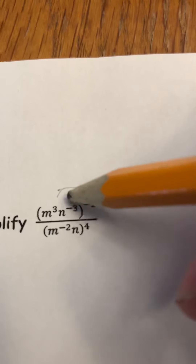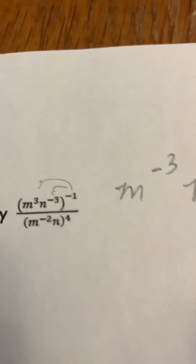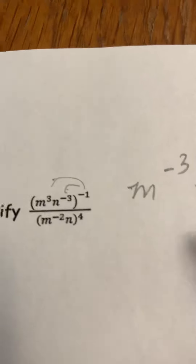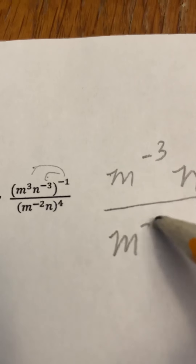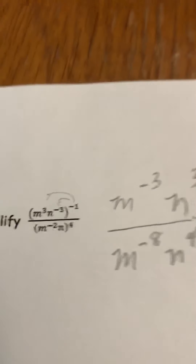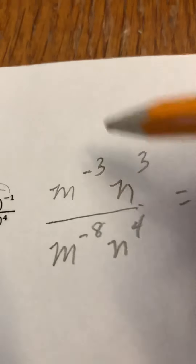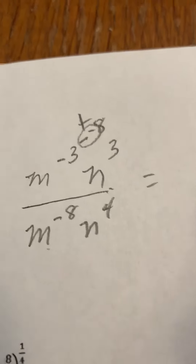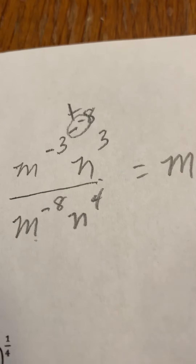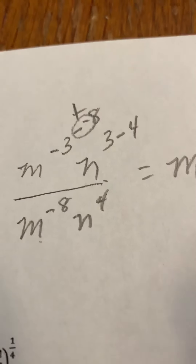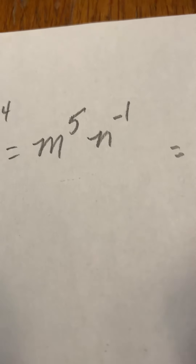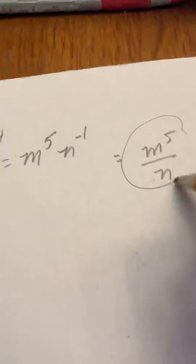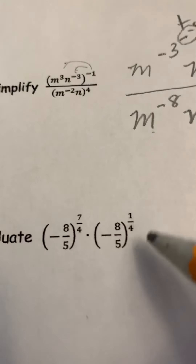Power of a power — we multiply the exponents — gives b to the power of 10. Then for this power of a power problem: we end up with m to the negative 3 and n to the positive 3 (negative times negative) on top, and m to the negative 8, n to the power of 4 on the bottom. When we divide we subtract: negative 3 minus negative 8 gives positive 5 for m. Subtracting 4 from 3 gives n to the negative 1. Since we can't have a negative exponent, the final answer is m to the power of 5 over n.